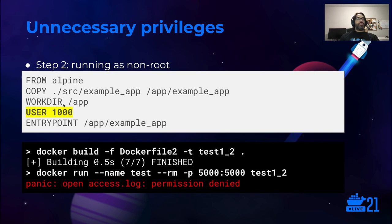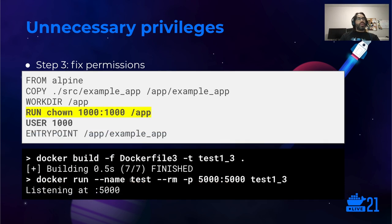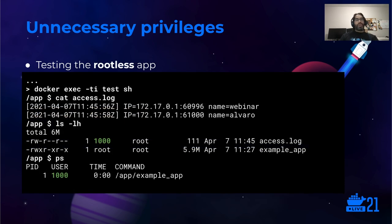We switch the user by using the USER instruction to use UID 1000 instead. When we try to run the container now, we get an error — the application cannot open the access log file. Why? The /app folder is owned by root, but we run as user ID 1000, so we cannot write to the /app folder. Let's fix the permissions by executing a chown right here to set the correct owner for the folder. Now the application starts correctly, and the access log file is owned by UID 1000, and the process runs as UID 1000.